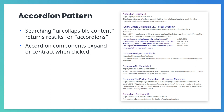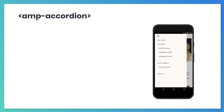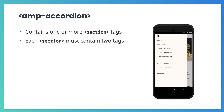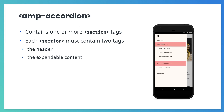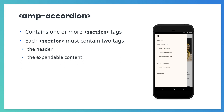Conveniently, if you look through the list of AMP components in the layout section, you'll see a handy component called AMP Accordion. The AMP Accordion component contains one or more section tags. Each of those sections must contain two tags: first, the header, and second, the expandable content. Initially, only the header is displayed. Clicking it shows the expandable content. Click it again, and that content gets hidden.